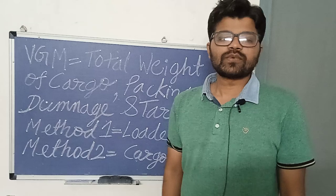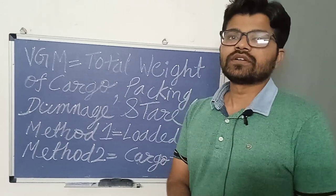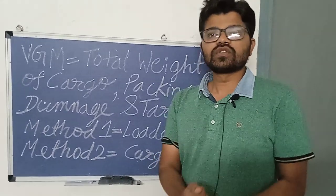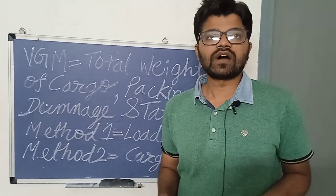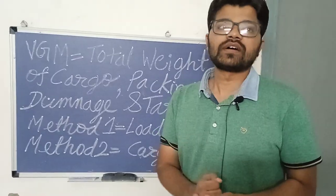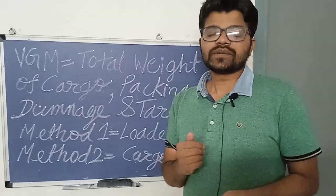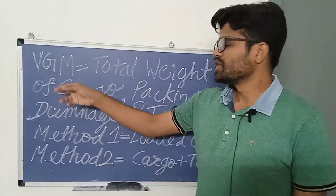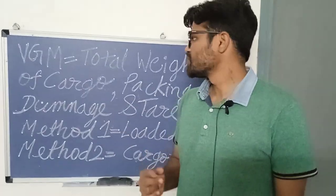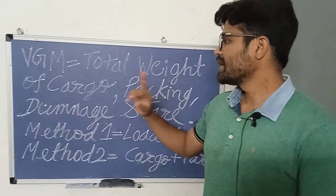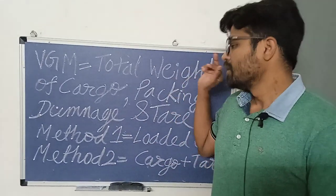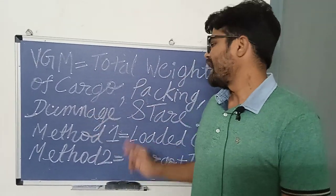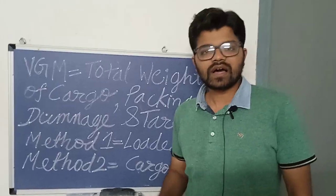Before export goods are customs cleared or loaded into the ship, the VGM weight of the cargo is measured by an exporter. VGM, that is Verified Gross Mass, is the total weight of the cargo plus packing plus dunnage and the tare weight of the container.